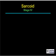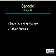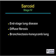Stage 4 sarcoid is end-stage lung disease. There is diffuse fibrosis. There may be bronchiectasis and a honeycomb lung, and there may be multiple cysts.